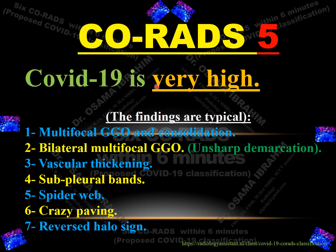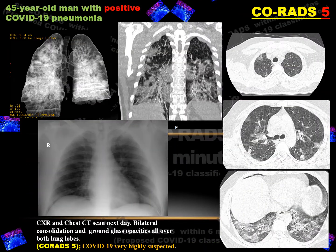The next is CO-RADS 5, where COVID-19 suspicion is very high. The findings are typical for diagnosis of COVID-19 by HRCT. If there are multifocal bilateral ground glass opacity or consolidation, multifocal ground glass opacity with unsharp demarcation, vascular thickening, subpleural bands, spider web sign, crazy paving, or reverse halo signs — these are typical CT findings for COVID-19, classified as CO-RADS 5. A 45-year-old patient with multifocal areas of consolidation, ground glass opacity, and basal consolidations confirmed positive for COVID-19 by laboratory testing.